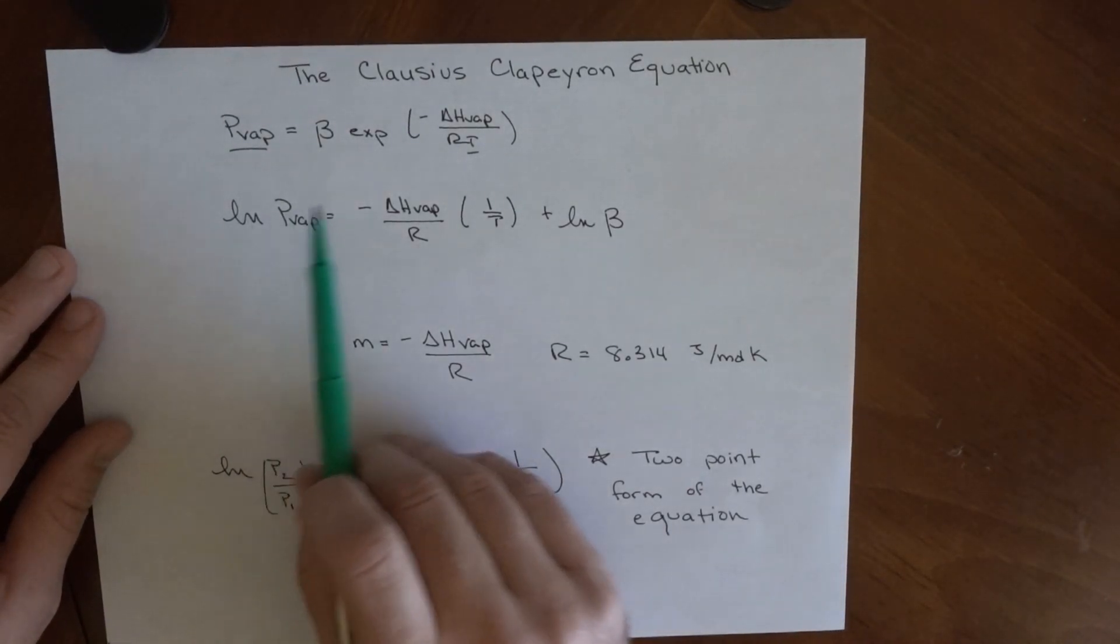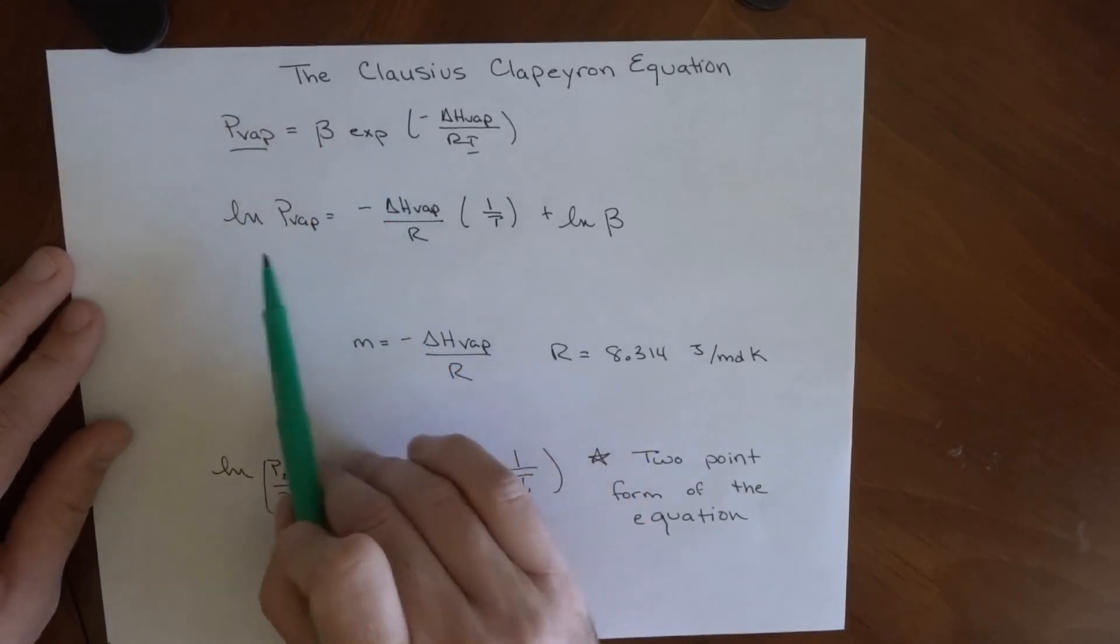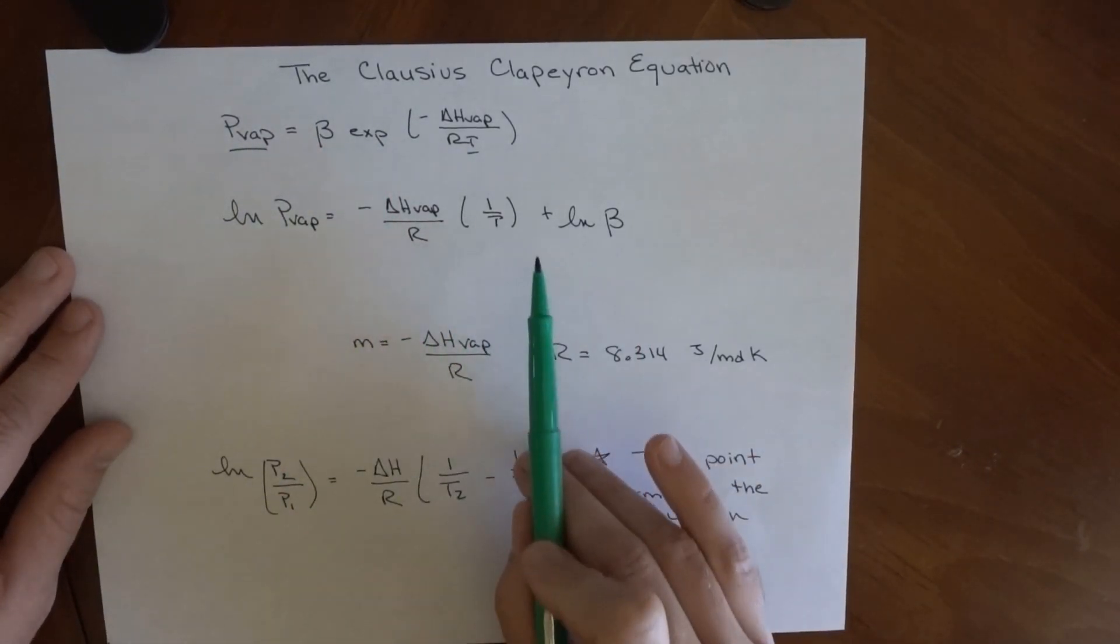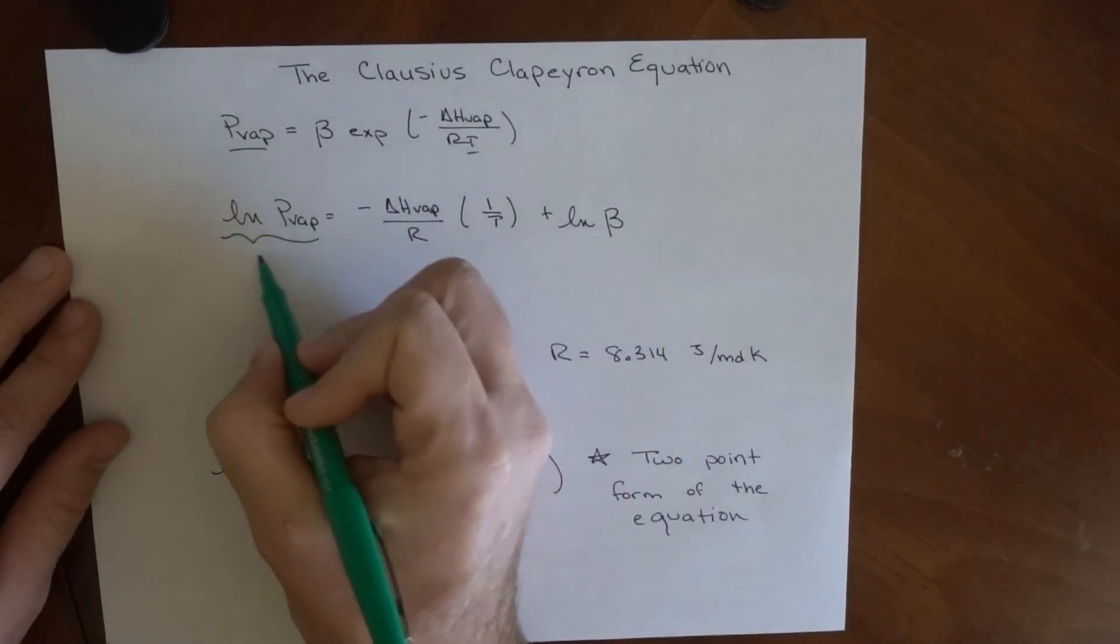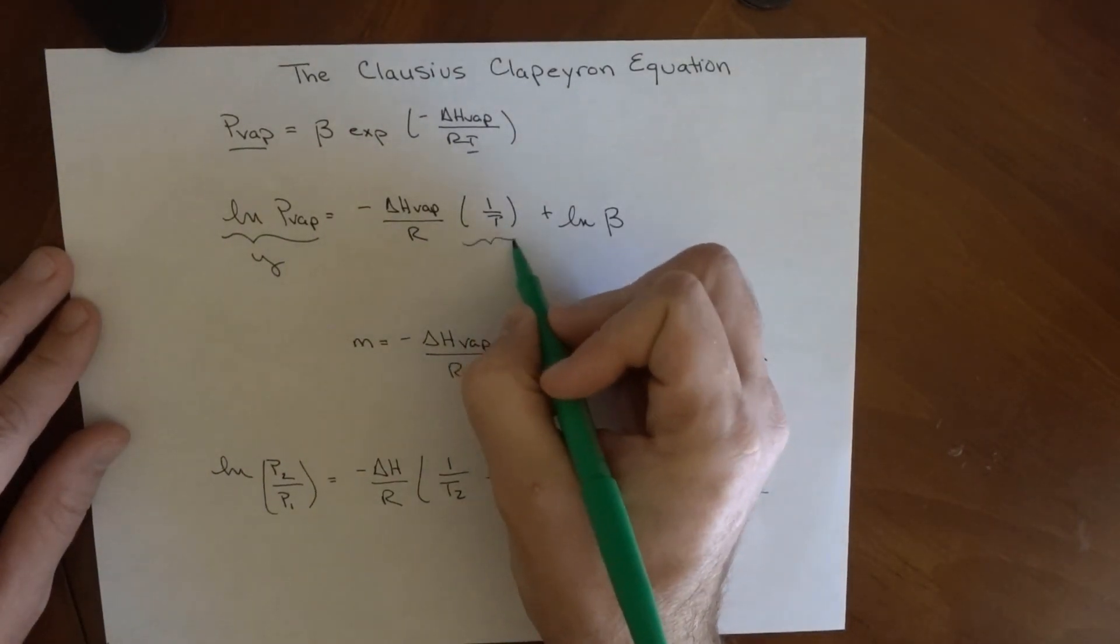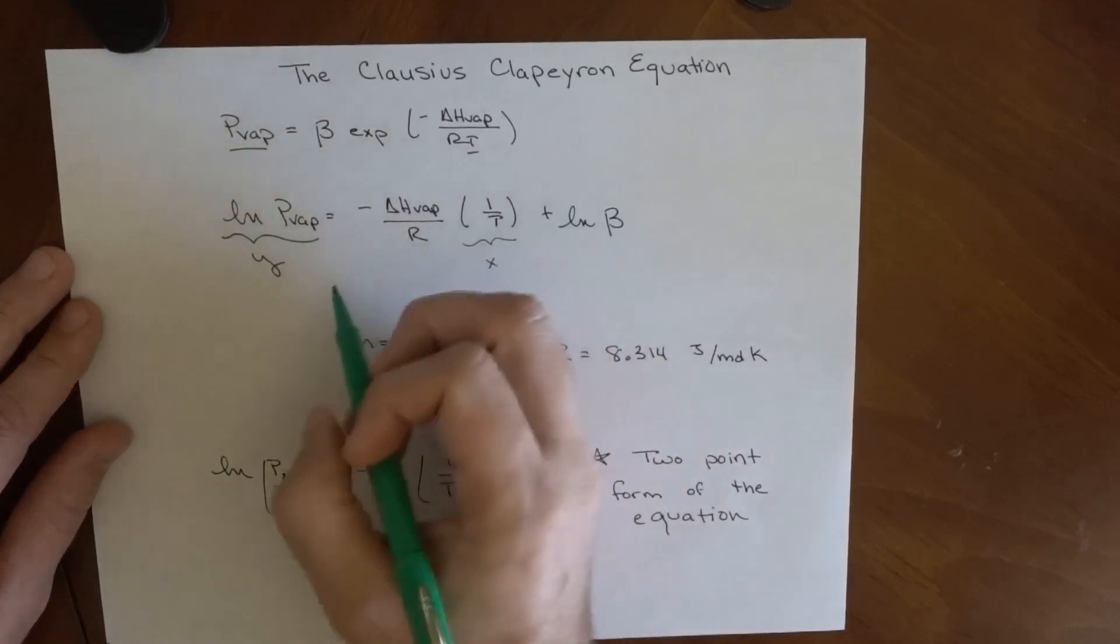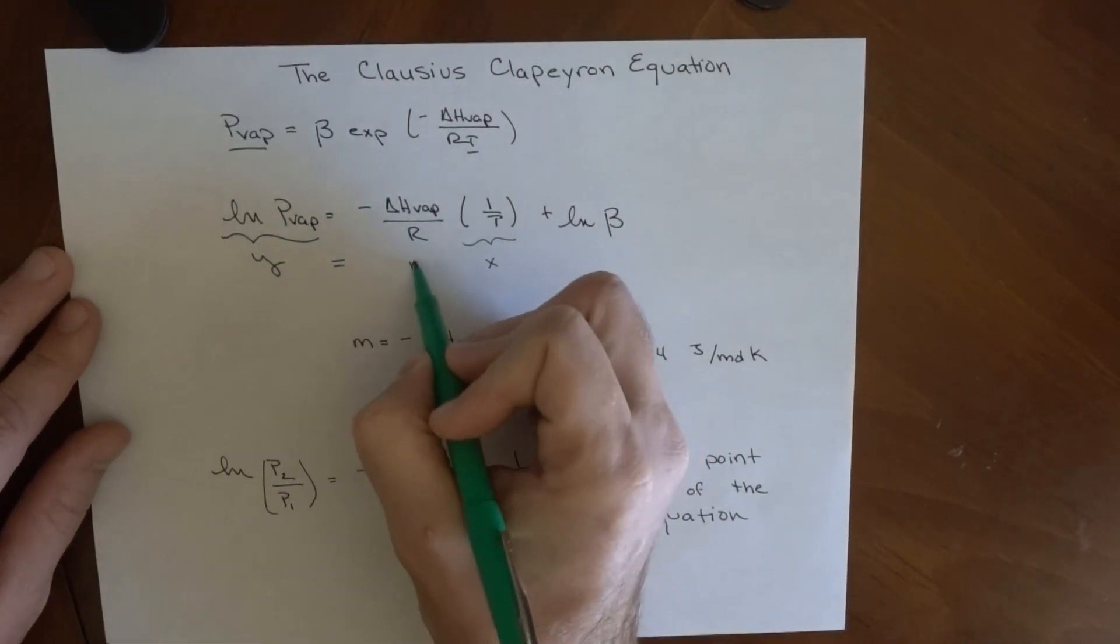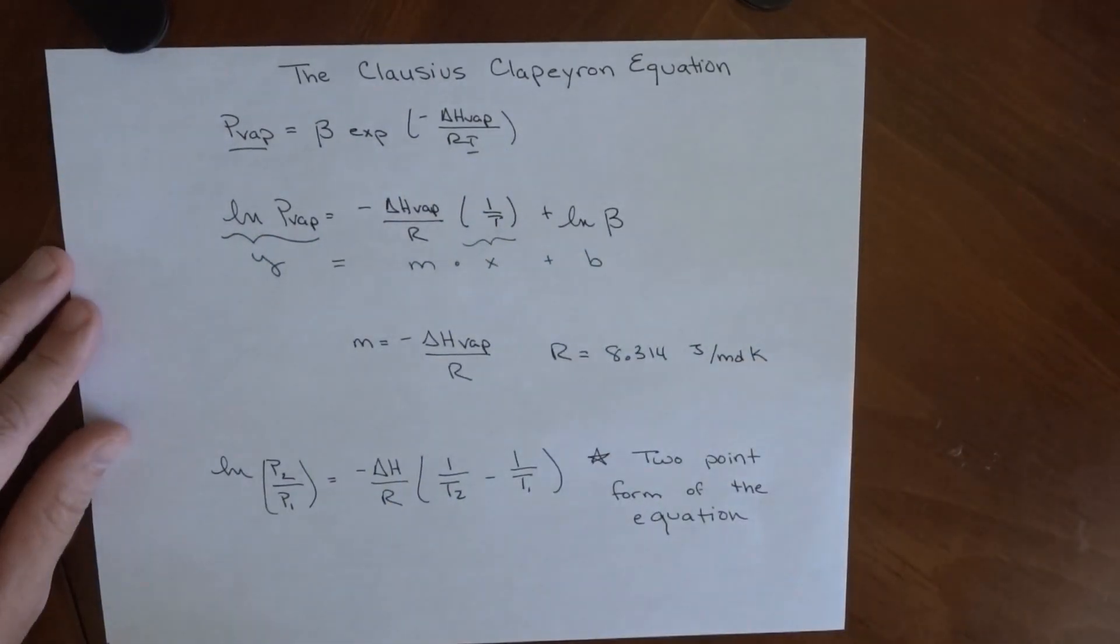If we work with this, take natural logs of both sides to get rid of this exponent, we arrive at this expression. This allows it to be linear, even though it may not look like it. If my y-axis is the natural log of vapor pressure and my x-axis is 1 over temperature, then this becomes y equals mx plus b, the slope-intercept form of a line.